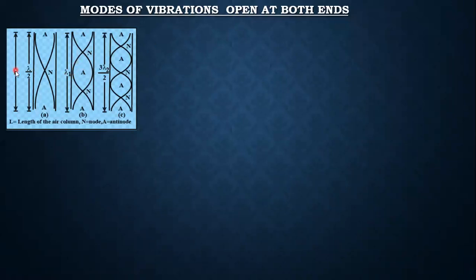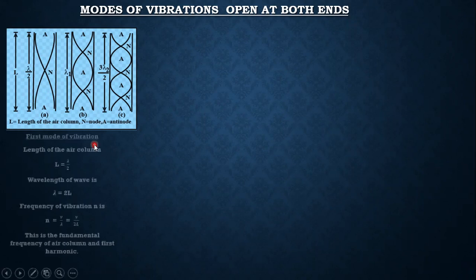The total length of the pipe is capital L. The distance between an anti-node and a node is lambda by four, and between two successive anti-nodes is lambda by two. From this, for the first mode we get lambda one distance, and for the third mode we get three lambda by two.